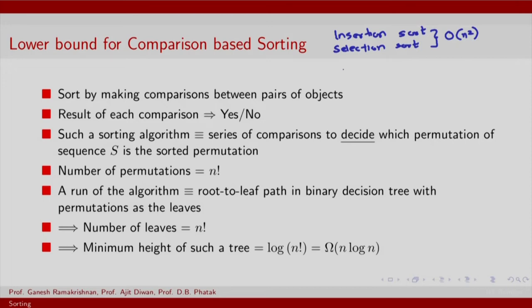The question is could we do better, and what is better? That is exactly what we want to understand by looking at a possible lower bound for sorting, especially based on comparison. Insertion and selection sort both invoke comparison of elements, and we discussed the analysis of insertion sort based on number of inversions, which correspond to number of swaps — all of which is basically comparison.